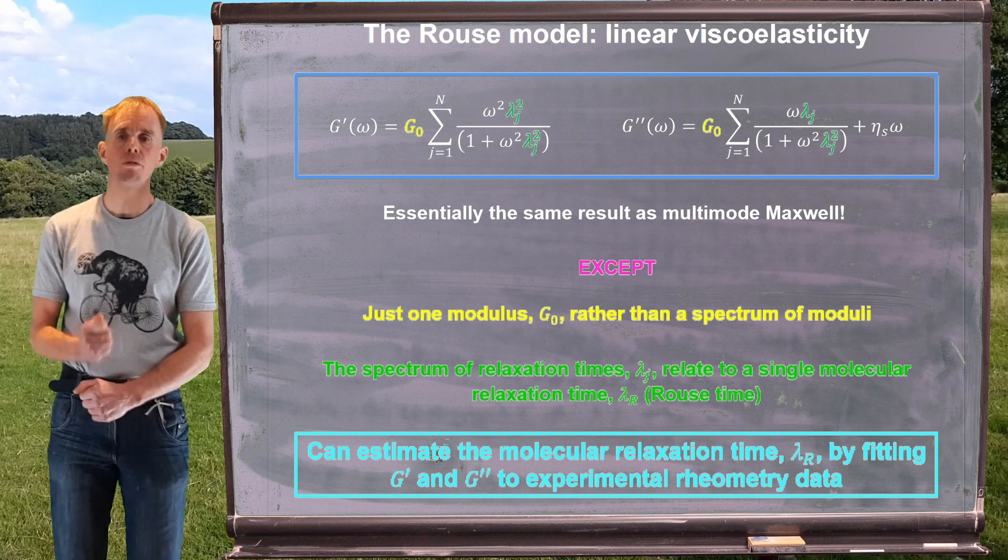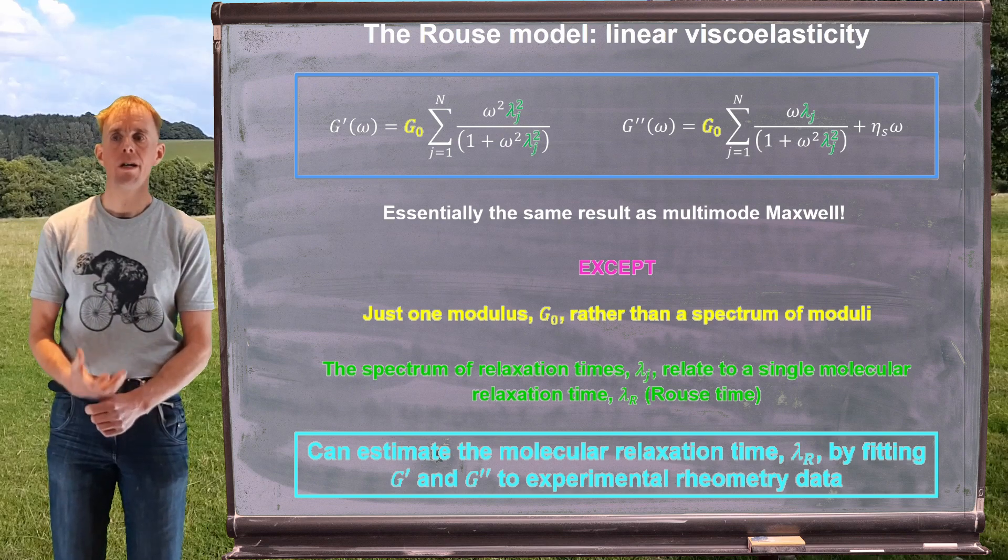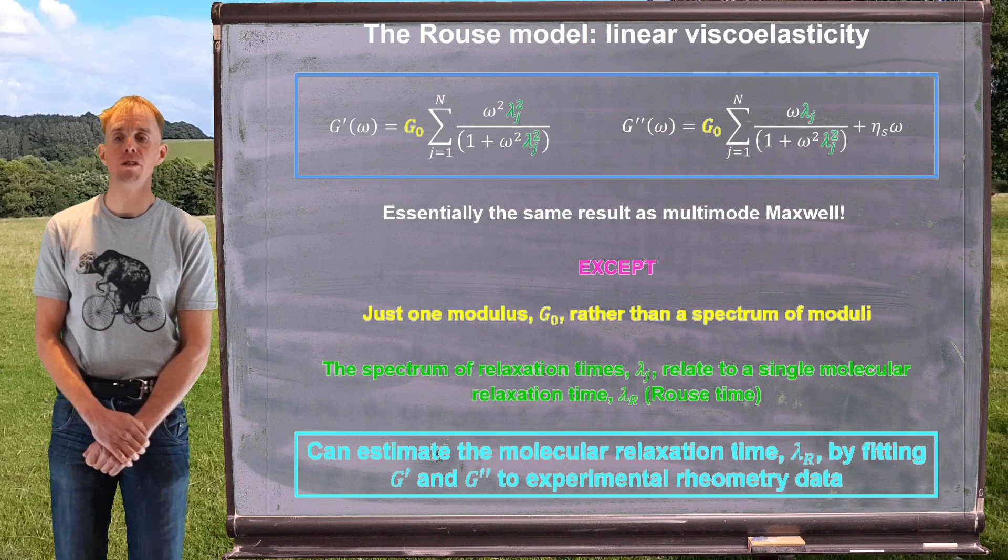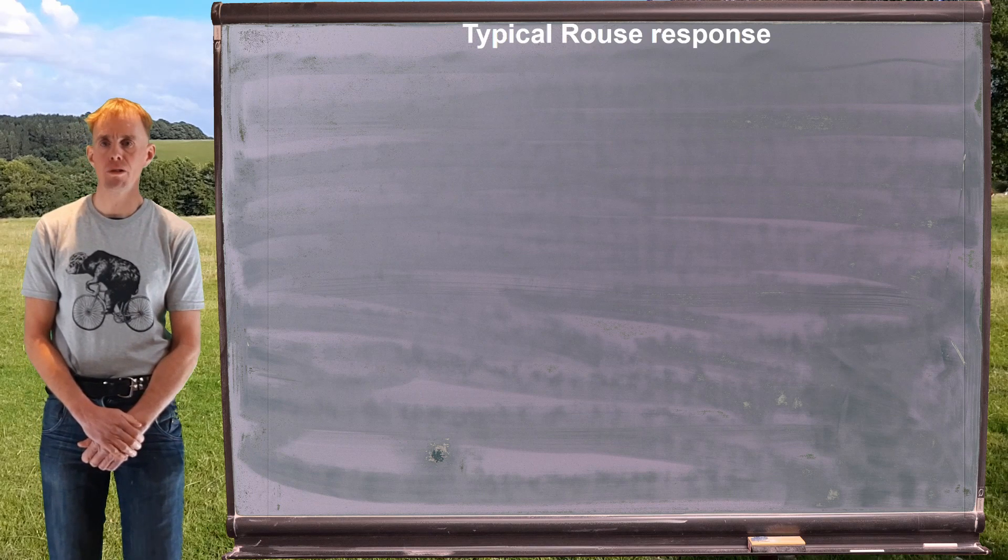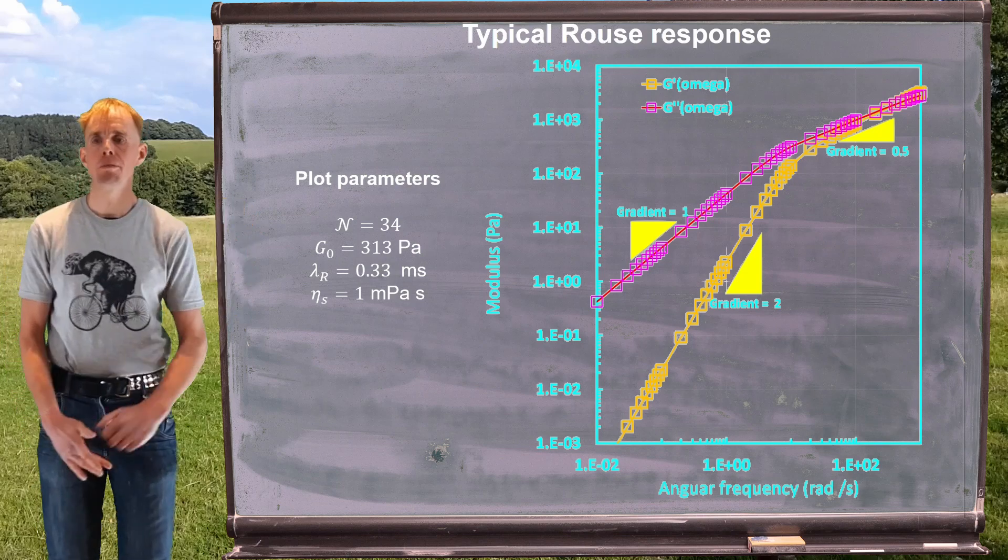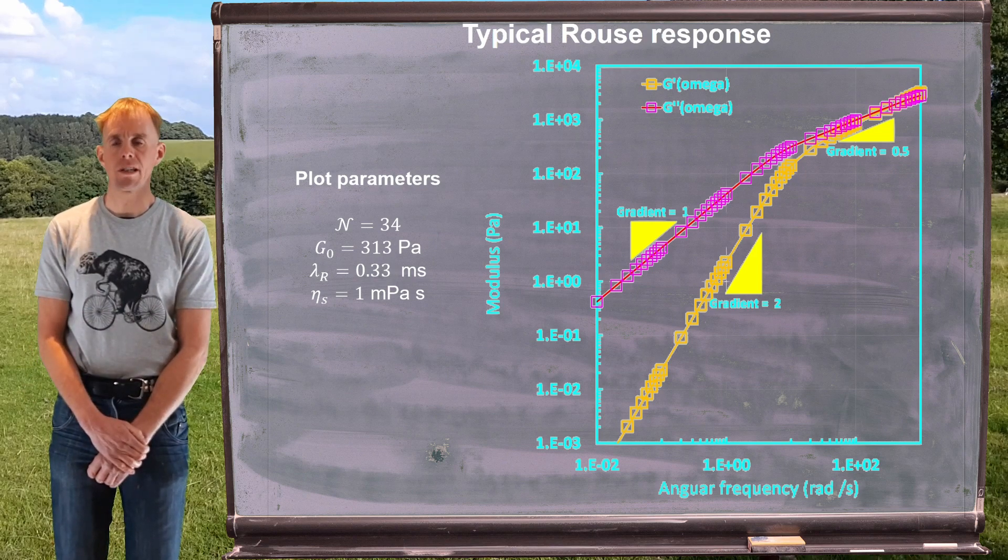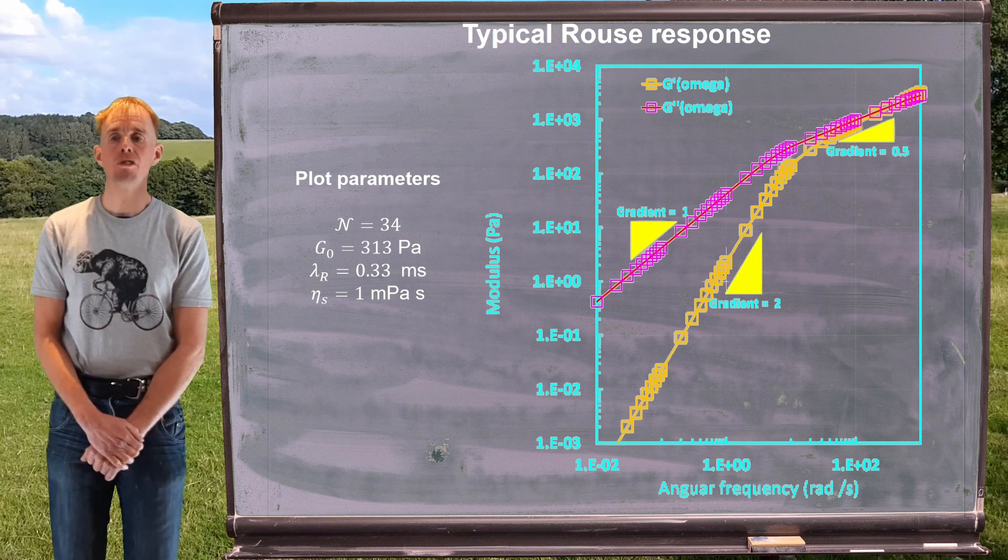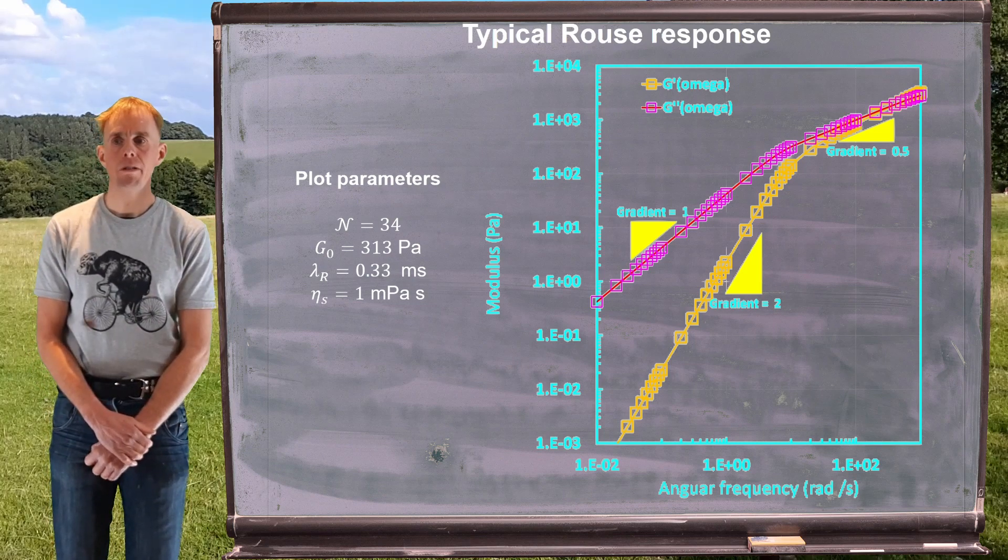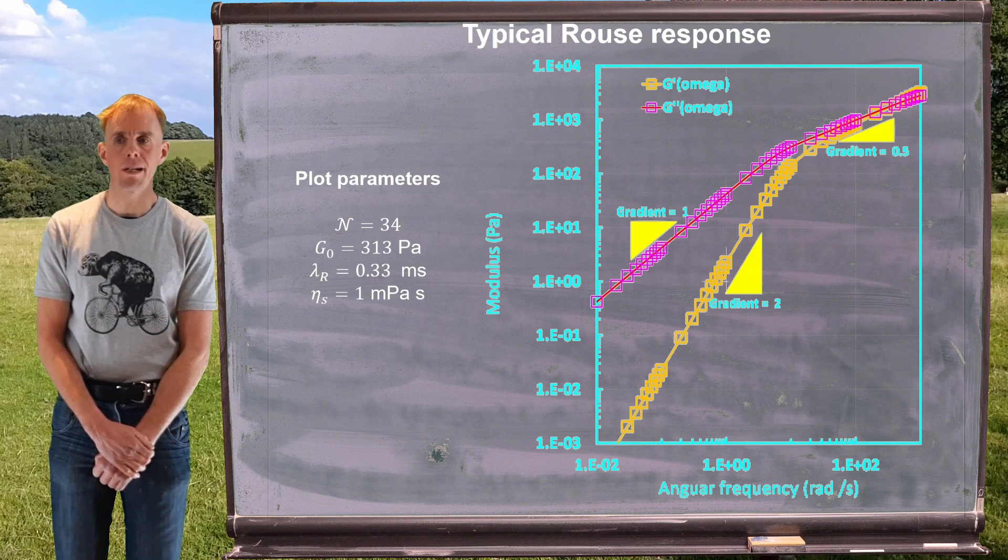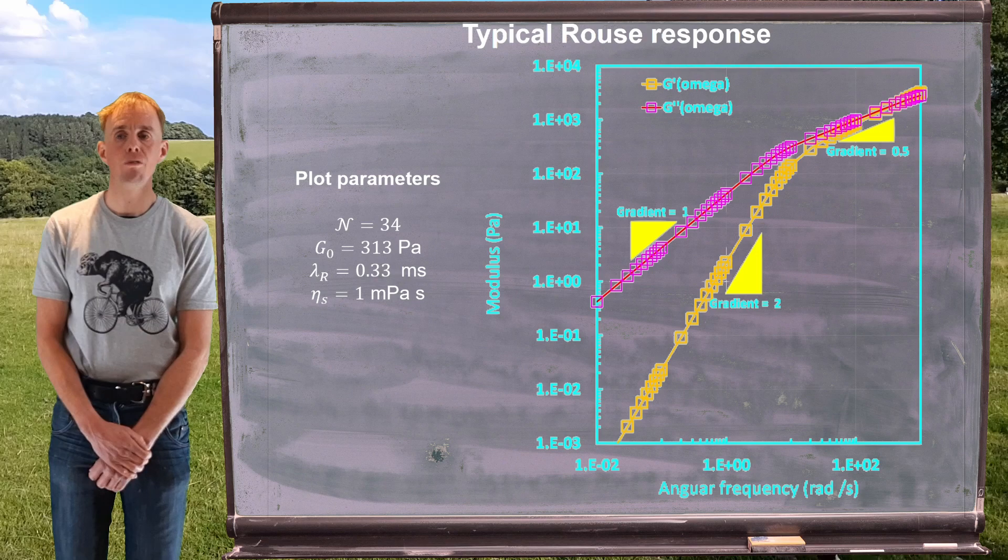The Rouse time can be a very useful timescale to look at the solution rheology behavior. We can estimate the Rouse time by fitting G' and G'' to experimental rheology data. So let's have a look at a typical Rouse response for a polymer solution. Here on the board, I've plotted modulus on the y-axis, and that can be the viscous modulus and the elastic modulus, and angular frequency on the x-axis. I've plotted the G' and G'' parameters straight from the Rouse model, and I've taken 34 Kuhn segments, an arbitrary modulus G₀ of 313 Pascal, an arbitrary Rouse time of 330 microseconds, and an arbitrary solution viscosity of one millipascal second.